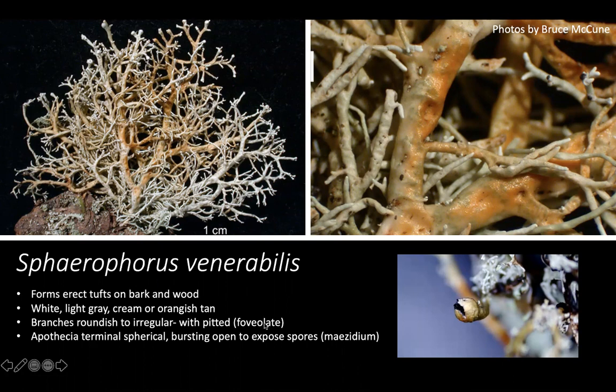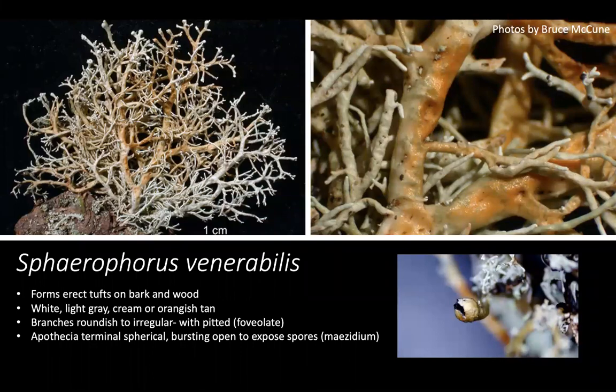This is a pretty common lichen in moist coniferous forests. You'll often see it covering the bark of large Douglas fir trees in an old-growth or older forest. What's really cool is this lichen has a UV-positive chemical in it, so if you take a UV lamp out at night and shine it along the trees, it'll shine bright white.